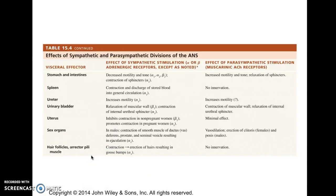Let's look at the sex organs. In males, sympathetic stimulation contracts smooth muscle in the vas deferens, resulting in ejaculation. Whereas parasympathetic activation in males produces erection of the penis. In this case, we see a collaborative effect: in order to have a complete sexual response, both the sympathetic and parasympathetic effects must work together. This brings me to the end of this second short presentation on the autonomic nervous system. Thanks so much for listening.